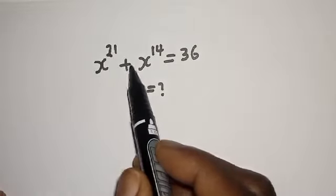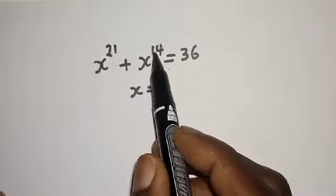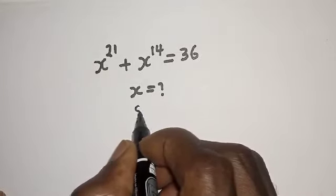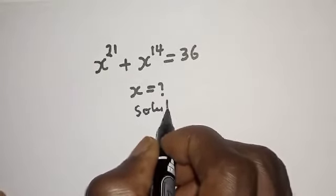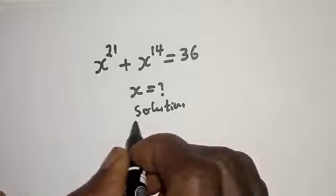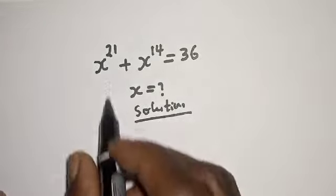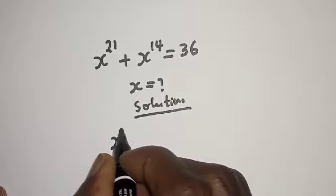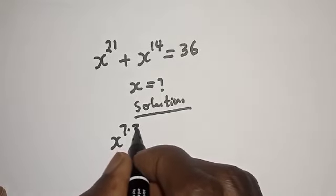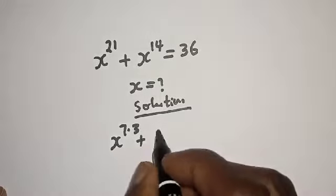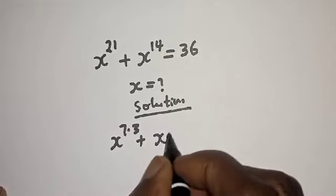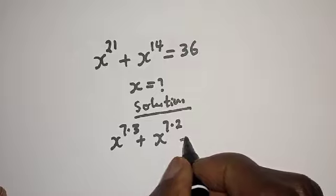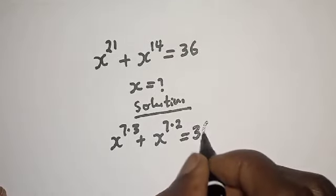How to solve s raised to power 21 plus s raised to power 14 is equal to 36. s raised to power 21 can be written as s raised to power 7 multiplied by 3, and s raised to power 14 can be written as s raised to power 7 multiplied by 2, giving us a sum equal to 36.